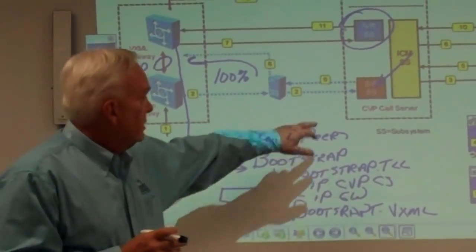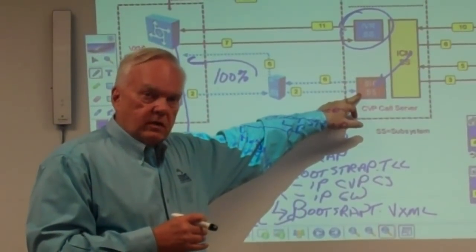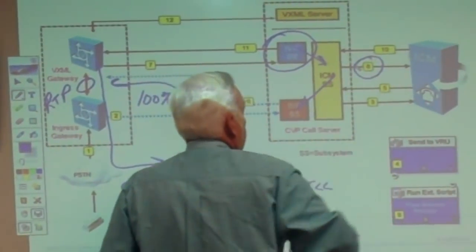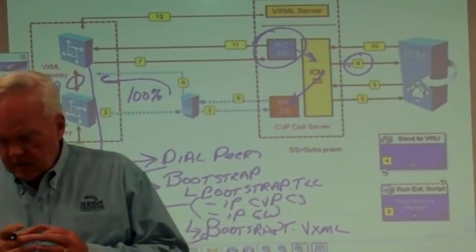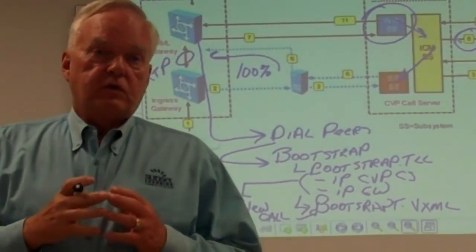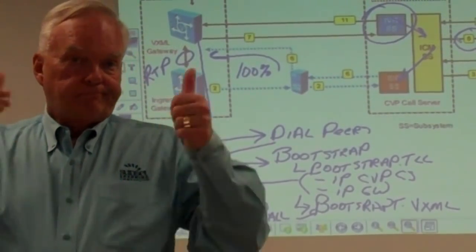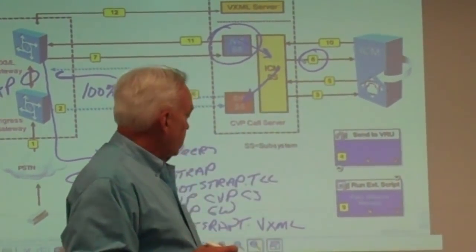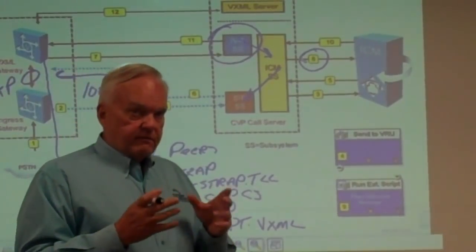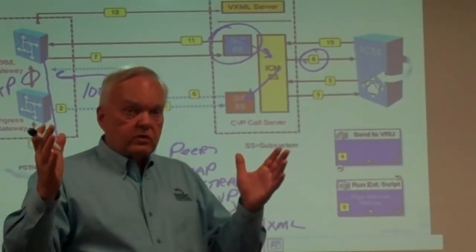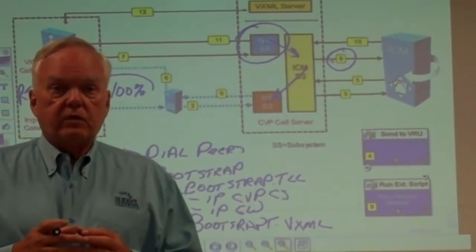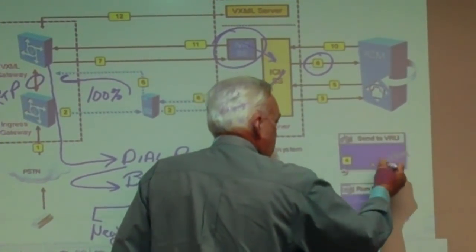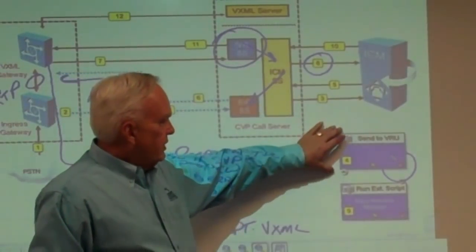We have left the SIP subsystem — called the switch leg — and are now in the VRU leg. This is sent over to ICM on step 8, back to ICM. ICM asks: what happened out there? Did you have any errors? The message is: errors equals zero. That's what ICM wants. Because errors equals zero, ICM looks up, based on the correlation ID 7740, and finds the session out of the hundreds of sessions running that is tagged with 7740. Because of that, we are successfully connected and succeed out of Send to VRU into the Run External Script node.